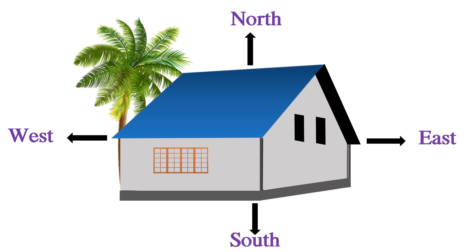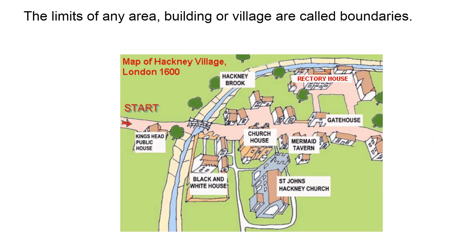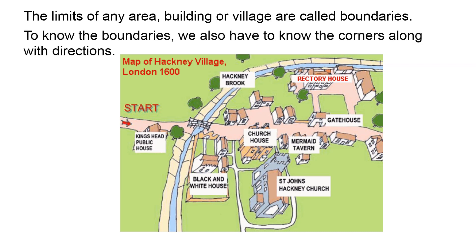So, we can identify any picture or map using this technique. Easily, we can identify the four directions. The limits of any area, town or village are called boundaries. Every village or town has boundaries. To know the boundaries, we also have to know the corners along with directions.